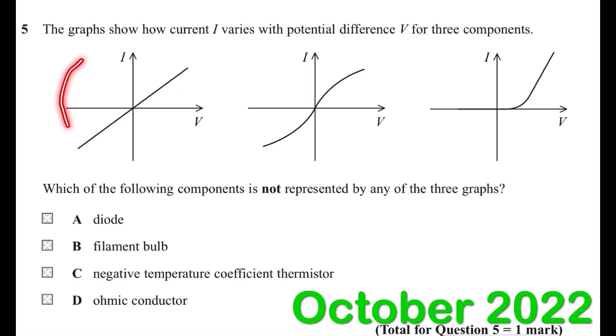For the curved one, the relation between I and V becomes curved. It means the value of resistance changes according to the change in temperature. So this one is describing the filament lamp or bulb.